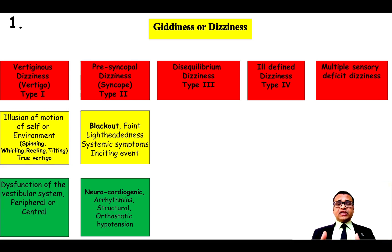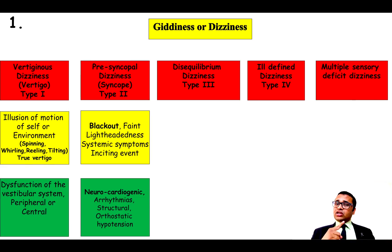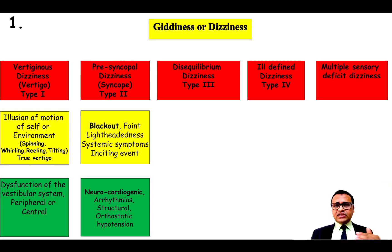Of course there are serious causes as well which can lead to presyncopal dizziness, such as cardiac arrhythmia, structural cardiac abnormalities, orthostatic hypotension, and many other causes. Coming to the third type of dizziness — disequilibrium dizziness.